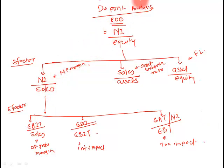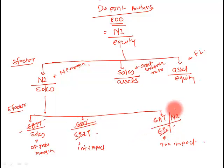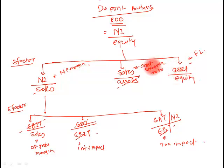Let's prove this mathematically. In the five-factor formula, EBIT cancels out, so those three factors reduce to net income divided by sales. Then assets cancel out, leaving net income divided by equity — which is your Return on Equity. That's how the formula is derived.